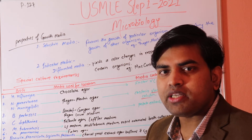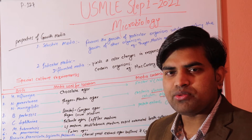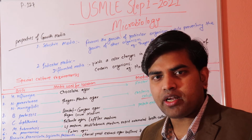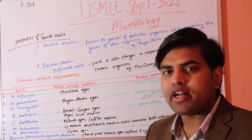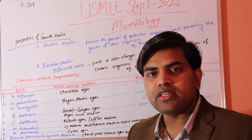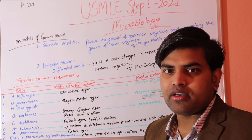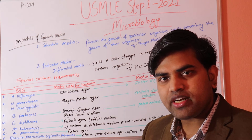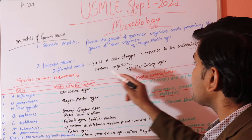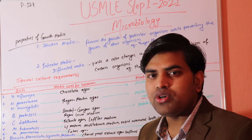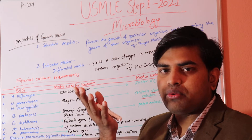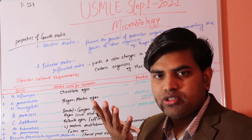Indicator media gives an indication by changing color. MacConkey agar is both a selective and indicator medium. It is selective because only gram-negative organisms grow on it — gram-positive organisms are inhibited. Blood agar is an enriched medium where everything grows, whereas MacConkey agar selects for gram-negatives and then further differentiates them into lactose fermenters and non-lactose fermenters.